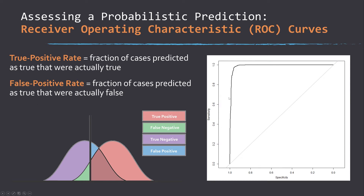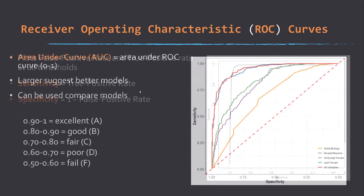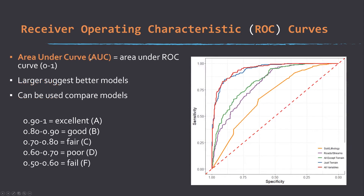This creates a curve or graphic, but that's hard to interpret on its own. So we like to get a summary statistic from it — that is the AUC, or area under the curve of the ROC curve.